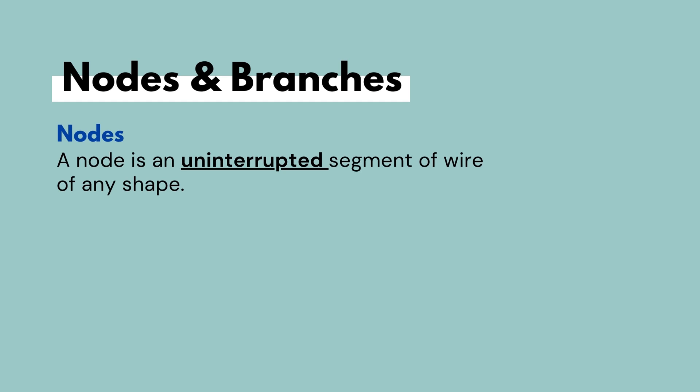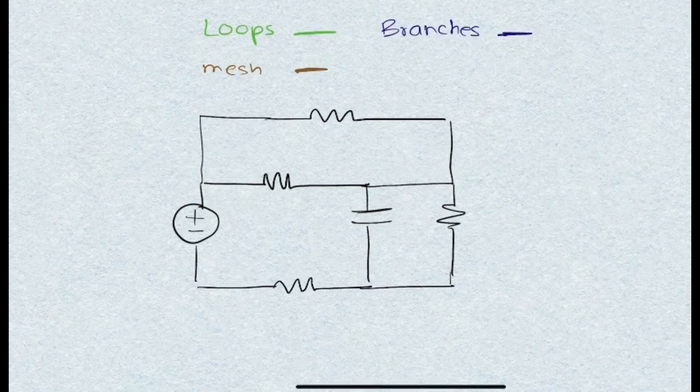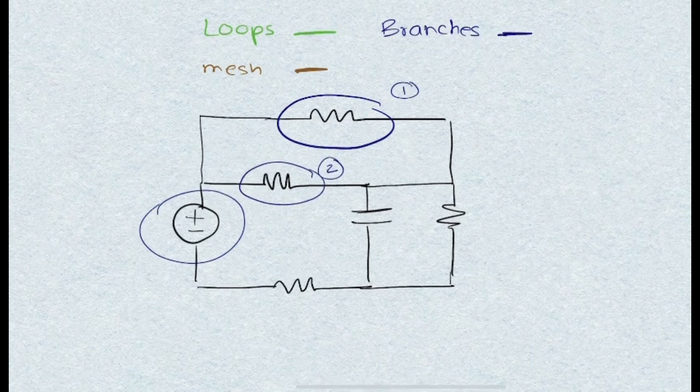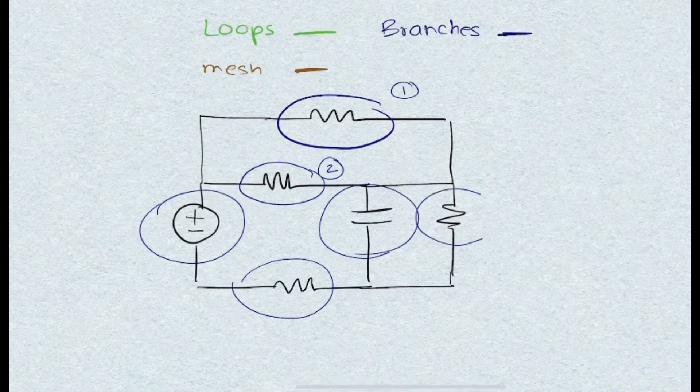Don't worry if you don't understand this concept right away. We will first switch over to a demo where we will be highlighting and looking at different nodes and branches in a circuit, and then switch over to the bench to further explain and even see a way to visualize nodes through a continuity test. When looking at the circuit, we can see that there are a number of components. Branches are basically any electrical components, and we can see a resistor here, another one here, a voltage source, another resistor, another capacitor, and another resistor — so a total of six branches in this circuit.